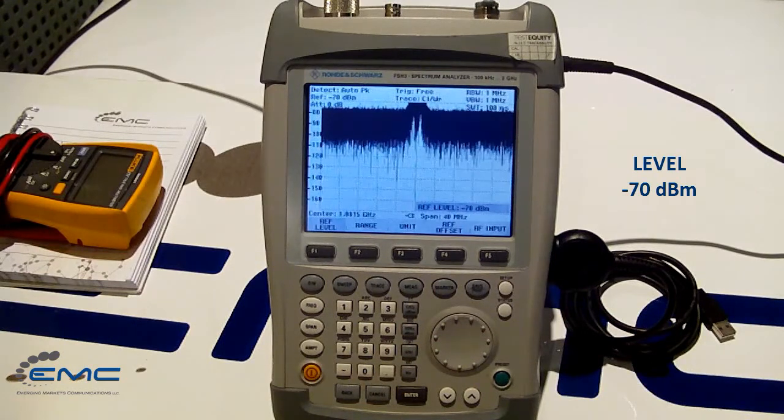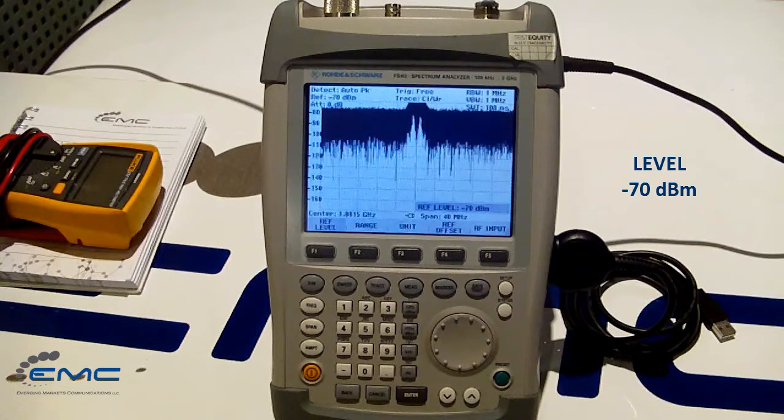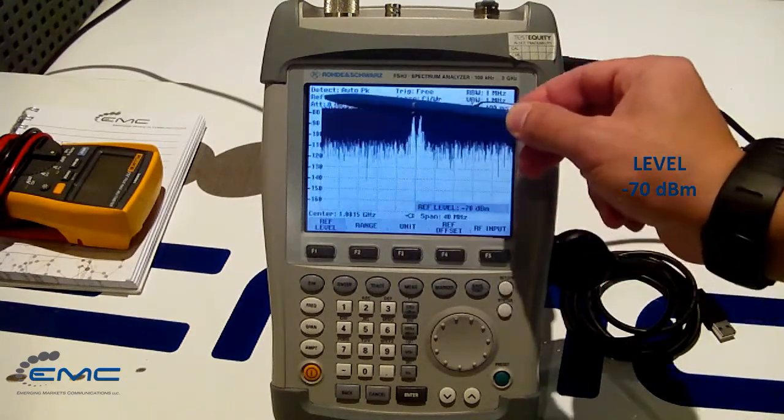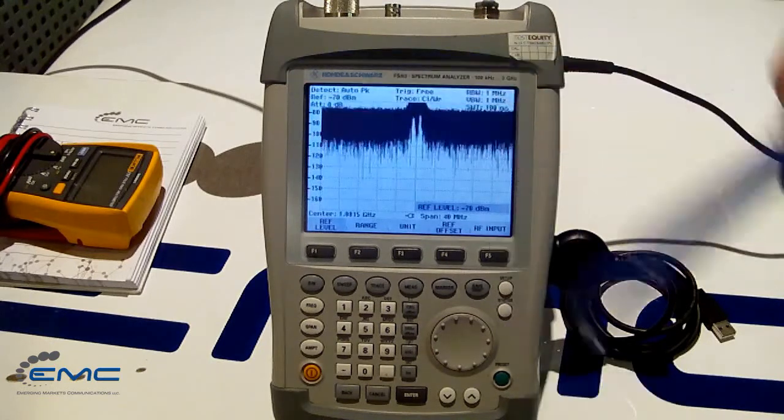Now, from the level axis scale, we could see that the level is set to negative 70 dBm. So from here, we can see it's negative 70, then negative 80, for example.